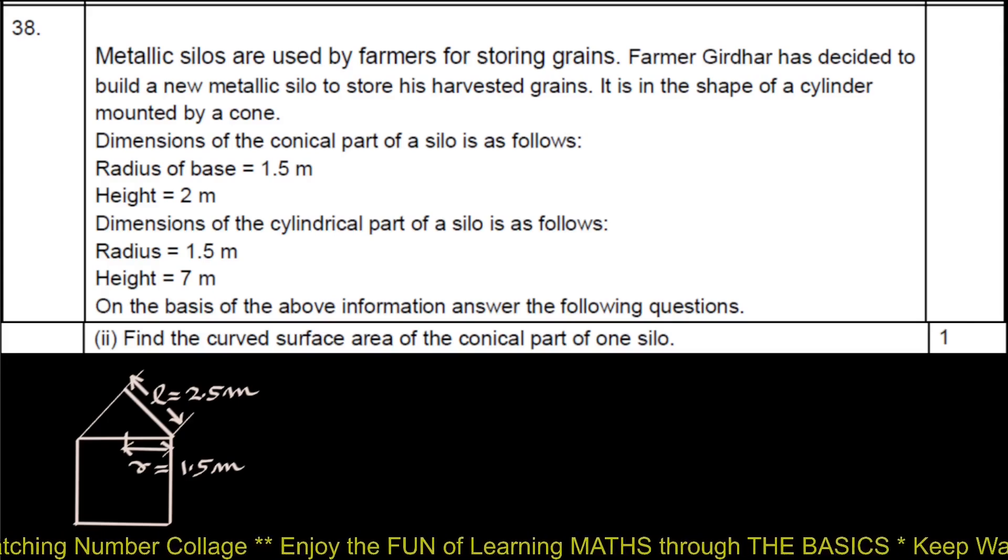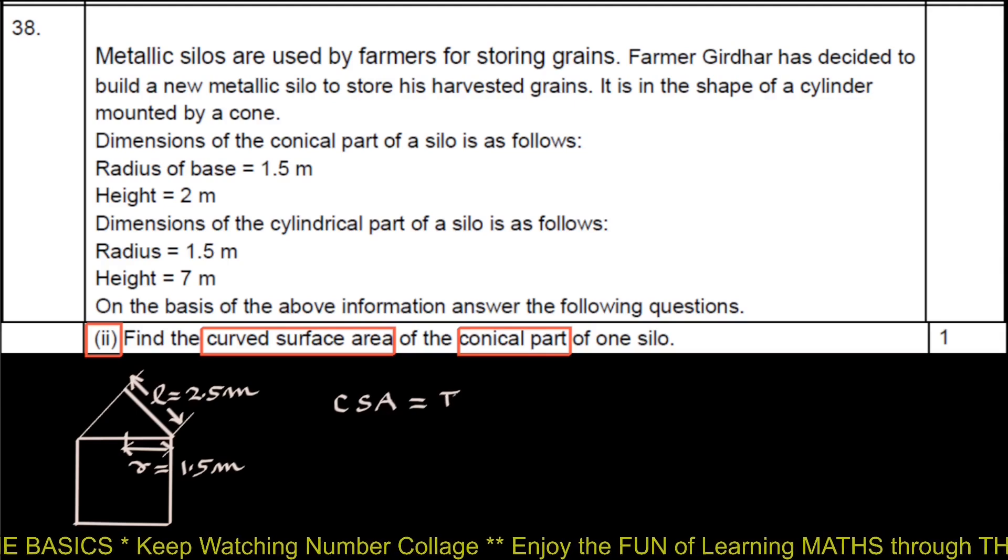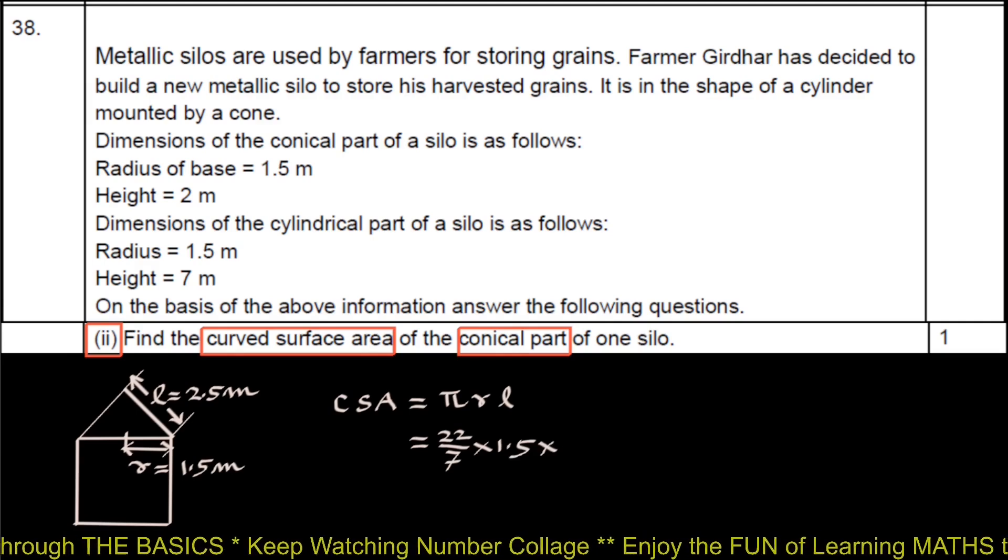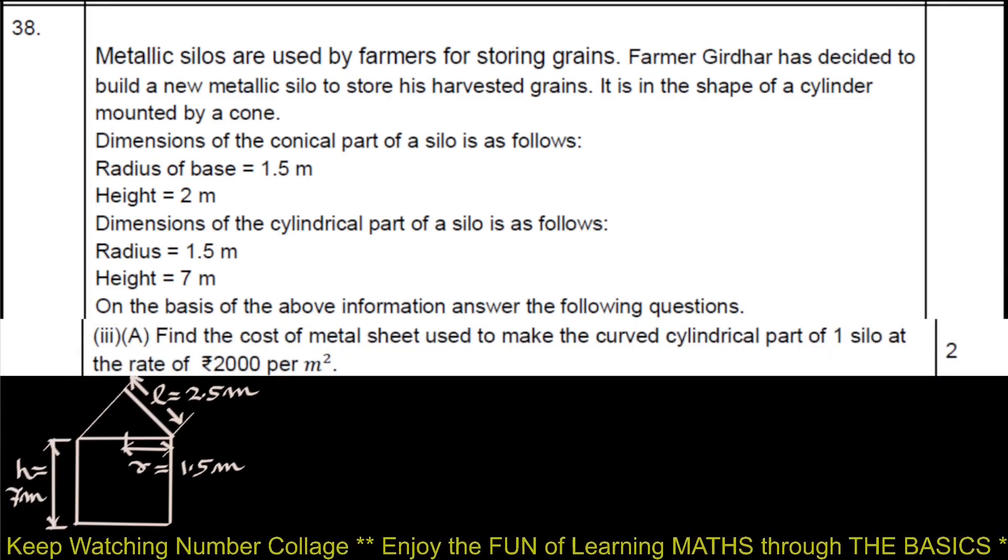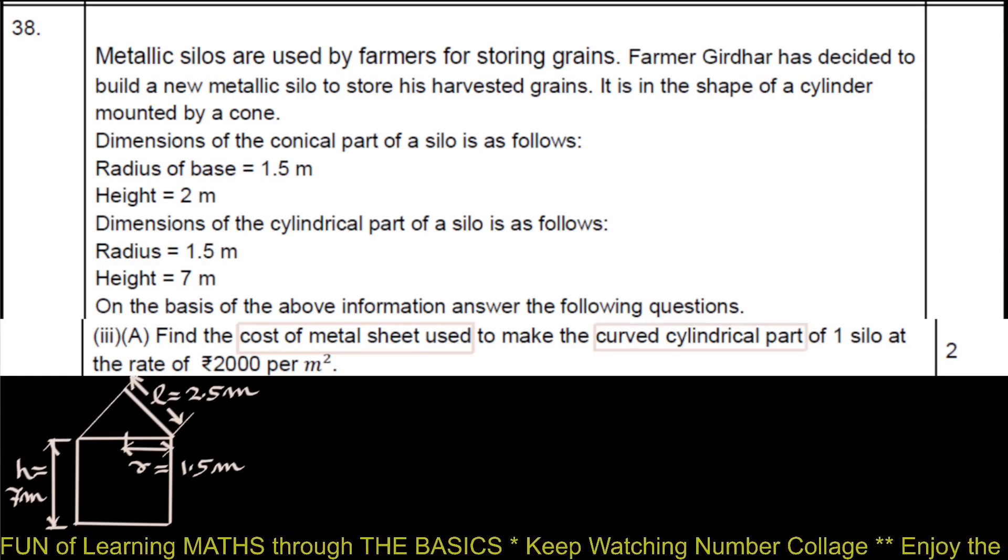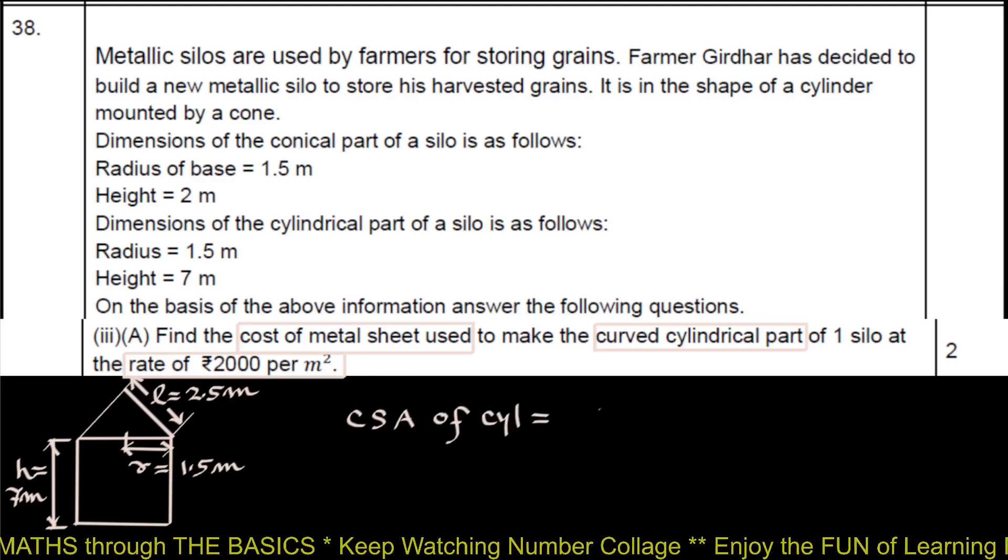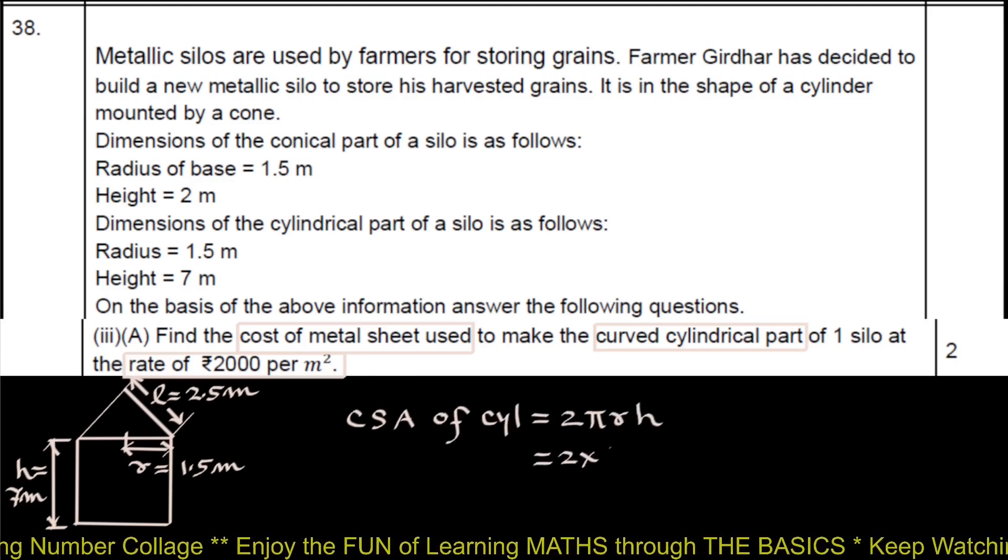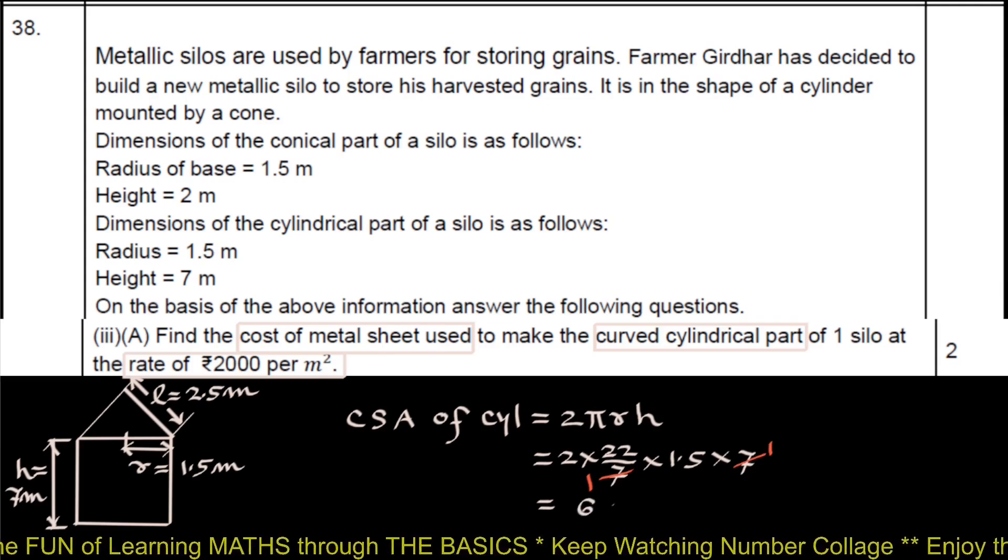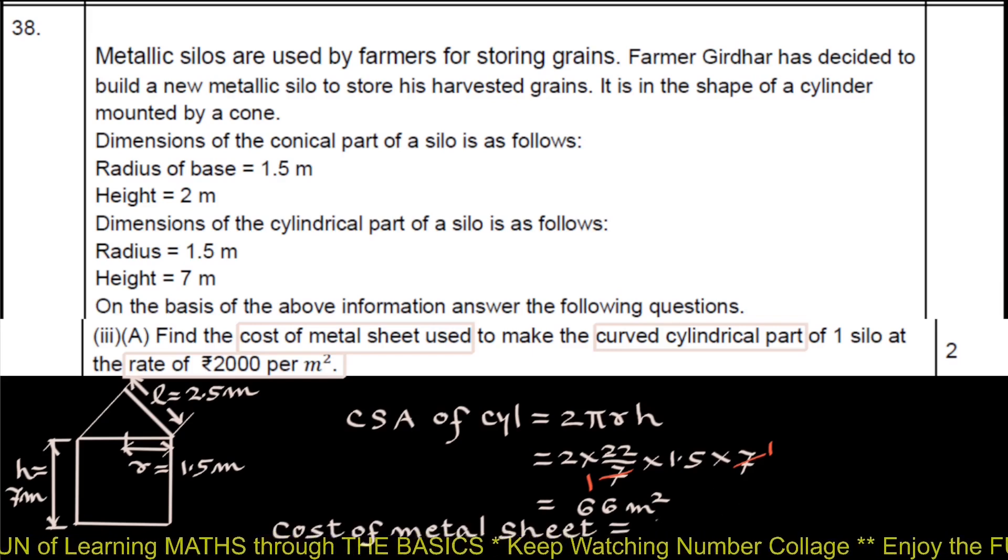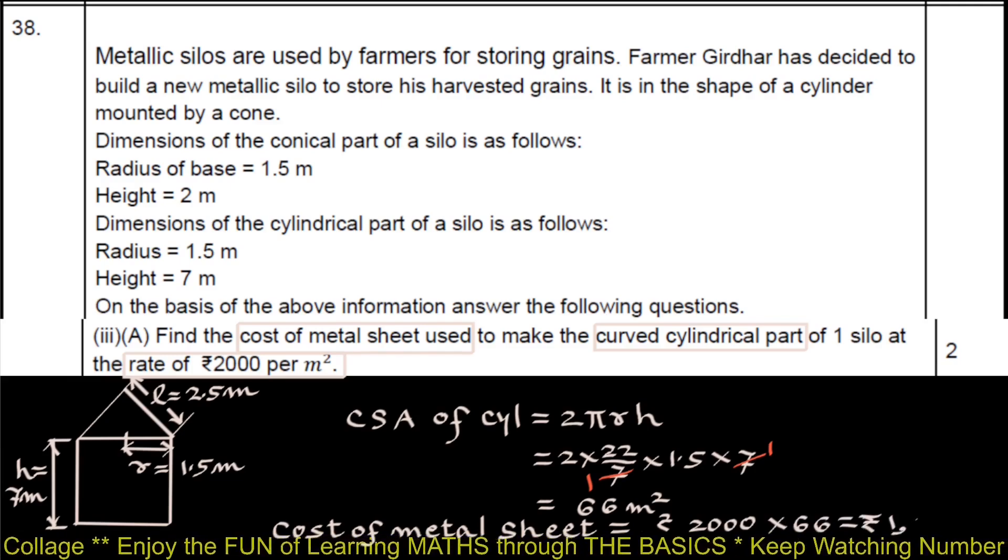In sub question 2, we have to find curved surface area of the conical part of the silo. Curved surface area CSA is π RL, which is 22 upon 7 into 1.5 into 2.5, which is 11.78 meter square. We have to find cost of metal sheet used to make the curved cylindrical part of one silo at the rate Rs. 2000 per meter square. We first have to find curved surface area of cylinder, which is 2π R into height of cylinder H. 2 into 22 upon 7 into 1.5 into 7, cancelling 7, it is 66 meter square. Now the cost of metal sheet used will be rate, which is 2000 per meter square, multiplied by CSA 66, which is Rs. 132,000.